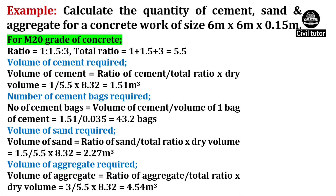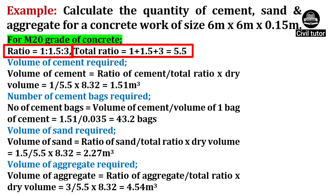For M20 grade of concrete, the ratio is taken as 1:1.5:3. That is, 1 part of cement is mixed with 1.5 parts of sand and 3 parts of coarse aggregate. Hence the total ratio will be equal to 1 + 1.5 + 3, which equals 5.5.